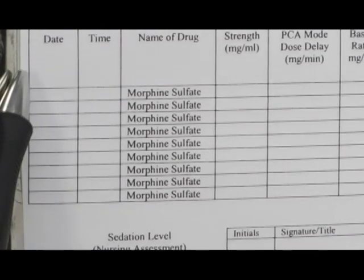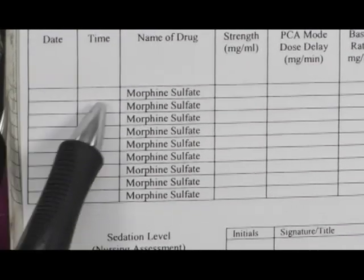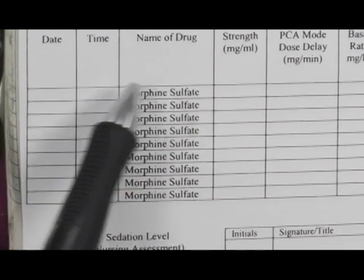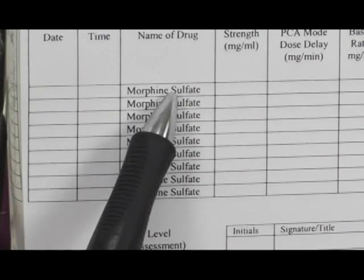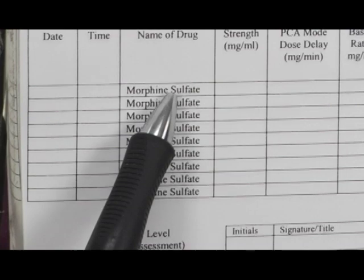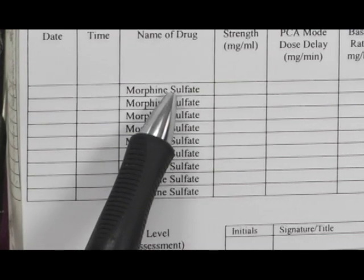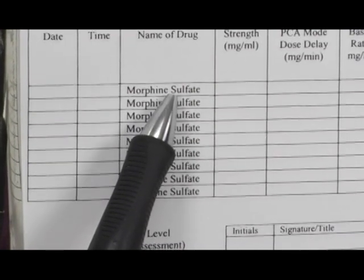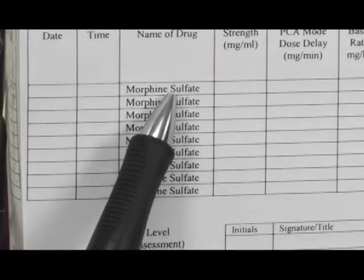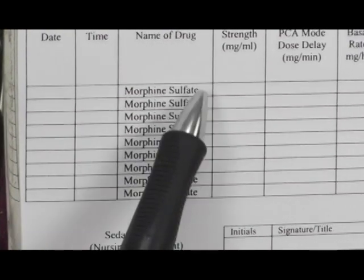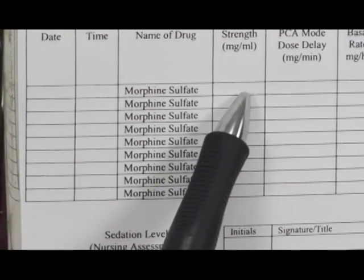The first column asks you to put in the date, and the next one the time. The third column wants the name of the drug. Some facilities have forms that have the name of the drug pre-printed. If not, you'll need to write it into this column, and don't use abbreviations — write the name out completely.